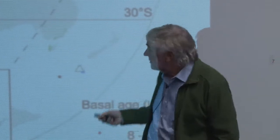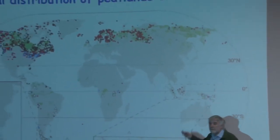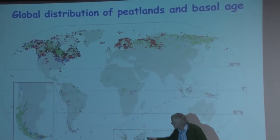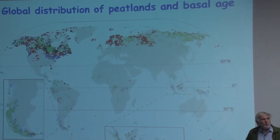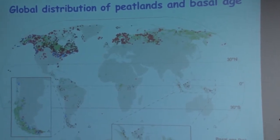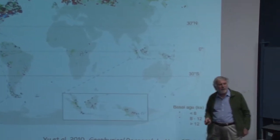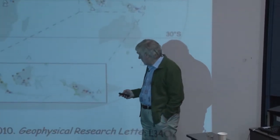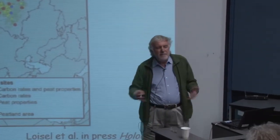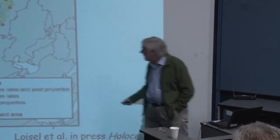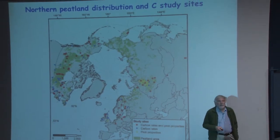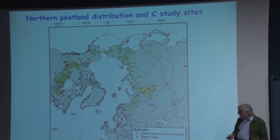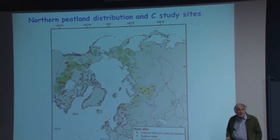This map shows the global distribution of peatlands in green — large areas in North America, similar areas in Europe and Siberia, pockets of large peat deposits in Indonesia, and also peat in Patagonia and other parts of the southern hemisphere including Australia and New Zealand. The diagram shows how recent these deposits are; most have occurred in the last 10,000 years or so. We are now beginning to collect together the large amount of data gathered over many decades on carbon accumulation rates in peatlands — this map from a paper by Julia Gazelle shows sites in North America, Europe, and Western Siberia.